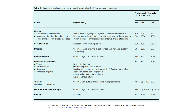Causes and mechanisms of non-immune Hydrops Fetalis also include prevalence by different trimesters — first, second and third. Genetic chromosomal abnormalities have the highest prevalence in the first trimester — 70% prevalence by trimester — as chromosomal problems are likely to show up earlier. Other causes include infections, hematological problems, extracardiac anomalies, tumours, feto-maternal hemorrhage, and unknown causes.